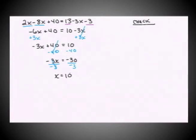But before we make that statement, we need to check it. And we check by plugging into the original problem. So 2 times X minus 8 times X plus 40 should equal 13 minus 3 times X minus 3. And now we're going to go back and plug in 10 wherever we had X and see if we get a true statement when we simplified down both sides of the equation.